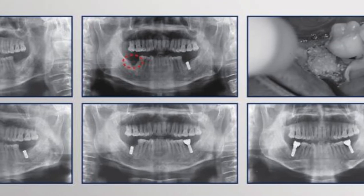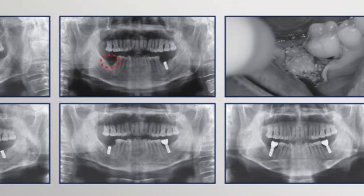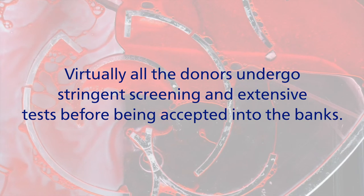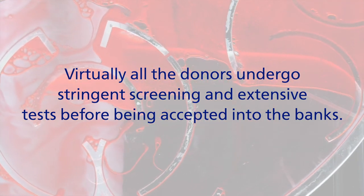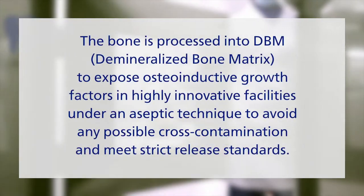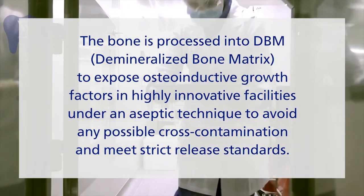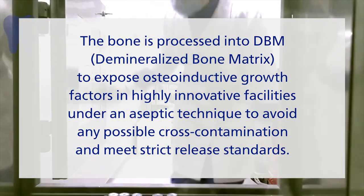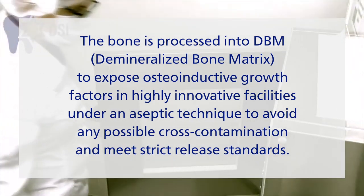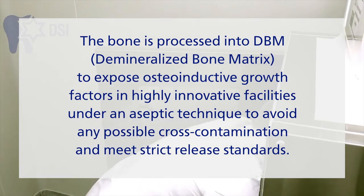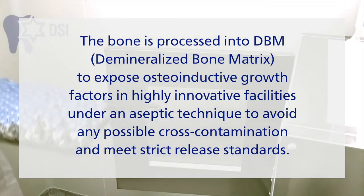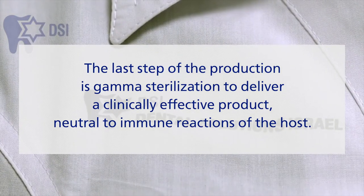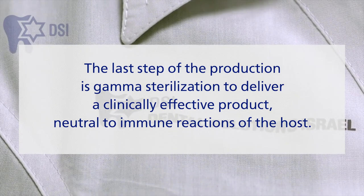Currently, only European Union registered tissue banks are used as a source, where virtually all donors undergo stringent screening and extensive tests before being accepted. After intake, the bone is processed into demineralized bone matrix to expose osteoinductive growth factors, in highly innovative facilities under aseptic technique to avoid any possible cross-contamination and meet strict release standards. The last step of production is gamma sterilization, to deliver a clinically effective product neutral to immune reactions of the host.